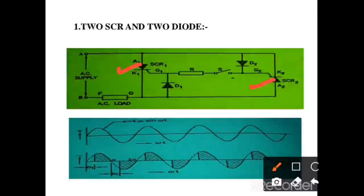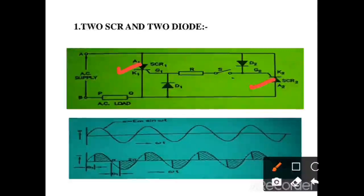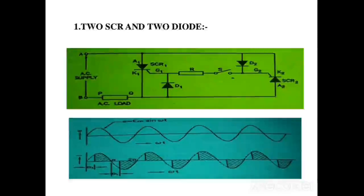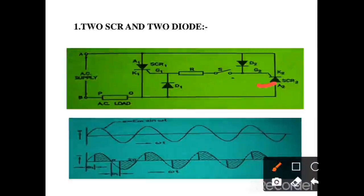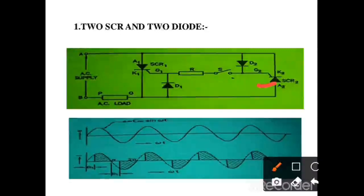Both SCRs are connected in inverse parallel condition. SCR1 is triggered during the positive half cycle and SCR2 is triggered during the negative half cycle. In this circuit, the load control circuit is not shown because it becomes complex. The circuit is shown only to understand how AC load can be controlled.